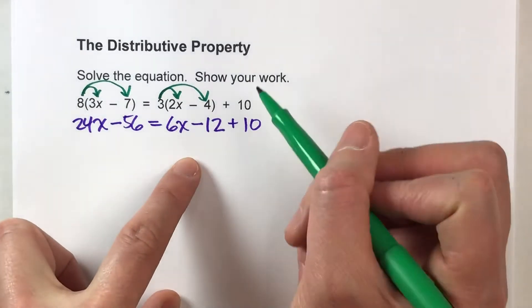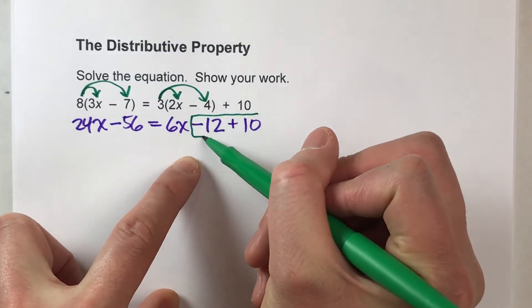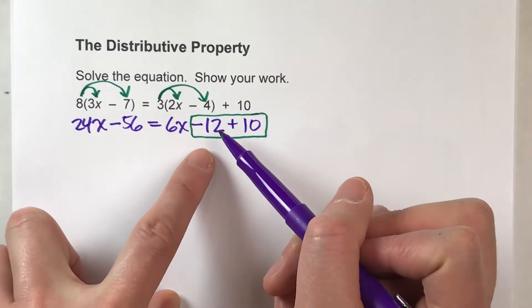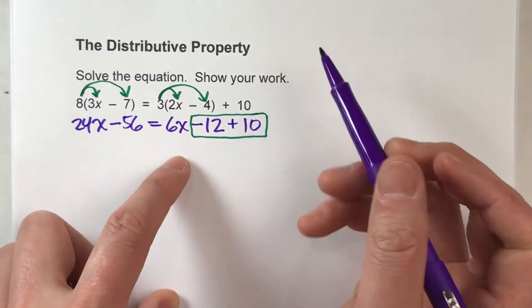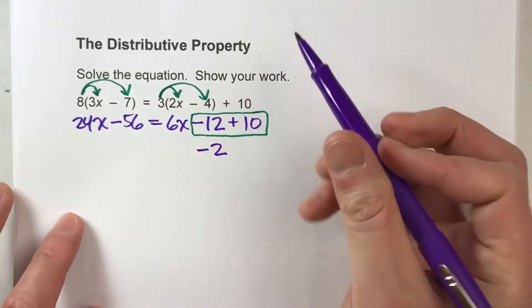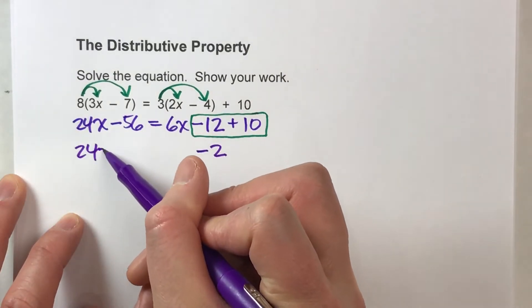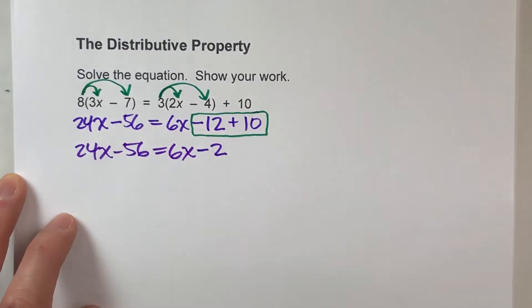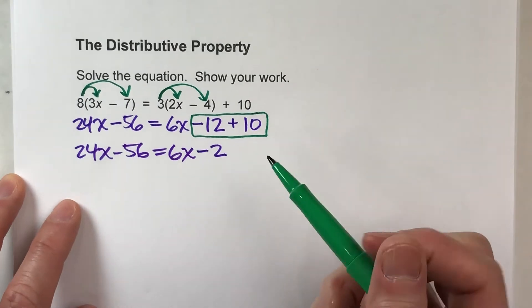Before I start undoing it though, notice I've got some like terms on one side of the equal sign. We've got regular numbers on the same side of the equal sign. Negative 12 plus 10 is negative 2. So I'm going to drop all this other stuff down, 24x minus 56 equals 6x minus 2. And now I can start solving this.